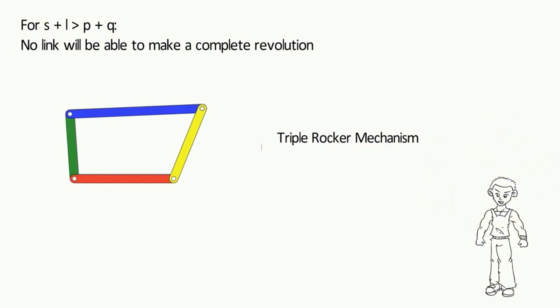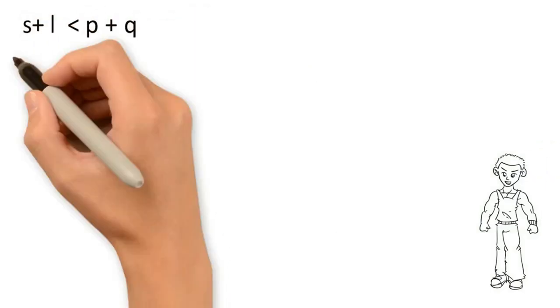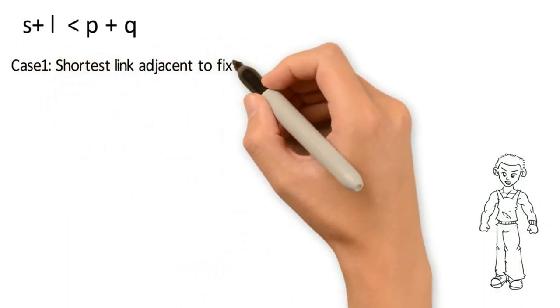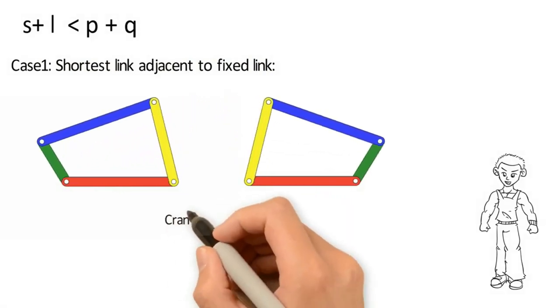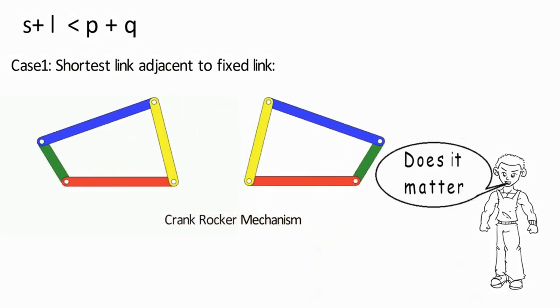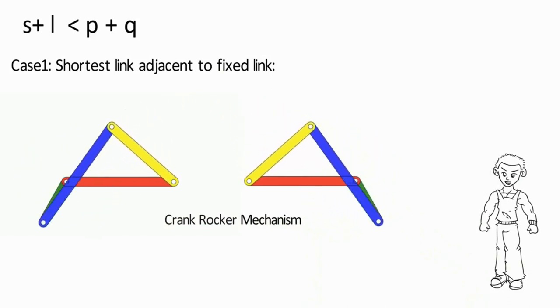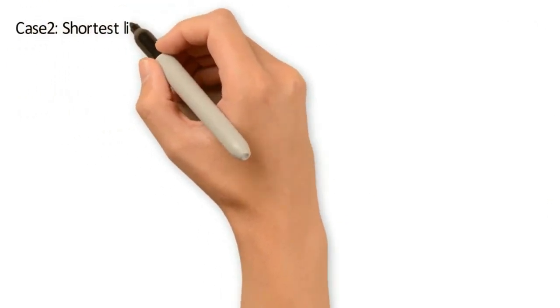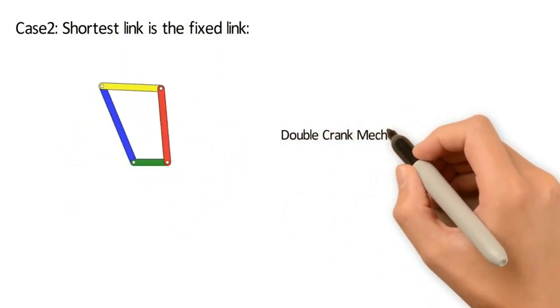Now we will discuss the Grashof condition. The condition is broken in two parts. The first part is S plus L less than P plus Q. Case 1: the shortest link is adjacent to the fixed link. The mechanism so obtained is known as the crank-rocker mechanism. The fixed link can be any of the other three remaining links. Case 2: the shortest link is the fixed link. The mechanism so obtained is known as the double crank mechanism.